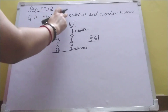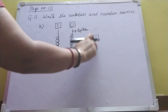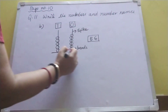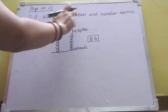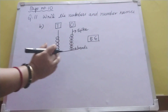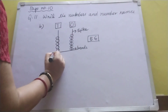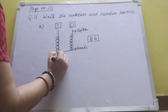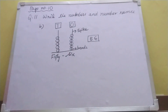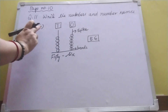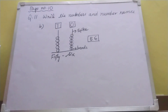Here they have asked to write the numbers and number names. We have written the number. The number name is written because there are a few more questions — that's why they have written it in plural. But we are solving only one question. So it is 56. Like this you have to write. Now, questions A and C you will be doing by yourself.